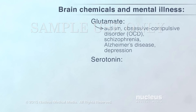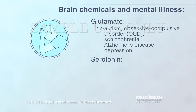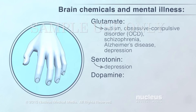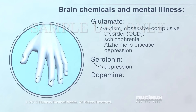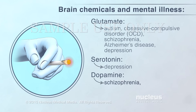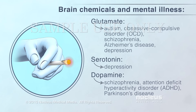Serotonin, another chemical messenger, helps control mood, hunger, and sleep. For example, people with depression often don't have enough serotonin. Dopamine helps control movement and is involved with feelings of pleasure and addiction. Low dopamine levels, or problems with the brain's ability to use it, may be linked to schizophrenia, attention deficit hyperactivity disorder, or ADHD, and other disorders.